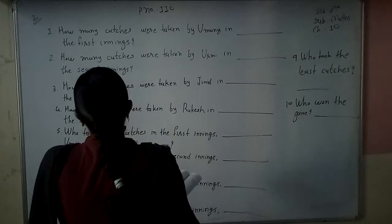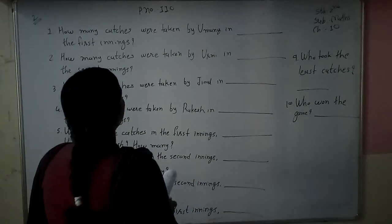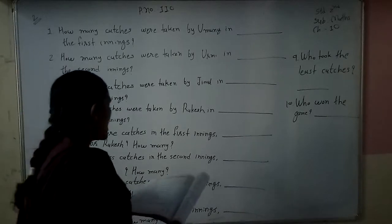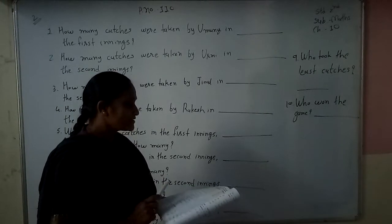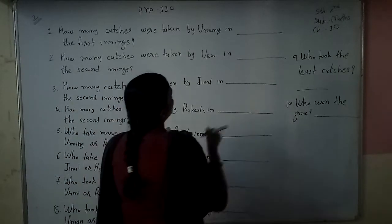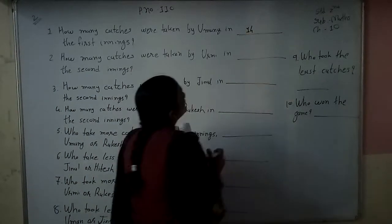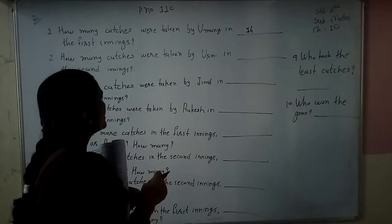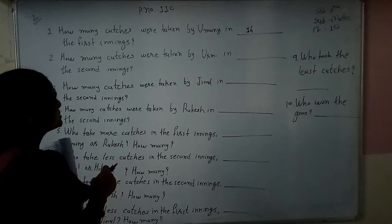First question: How many catches were taken by Umang in the first inning? Umang took 14 catches in the first inning. We write here 14 — so the answer is 14 catches in the first inning.